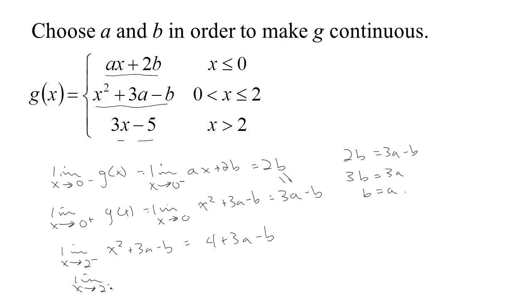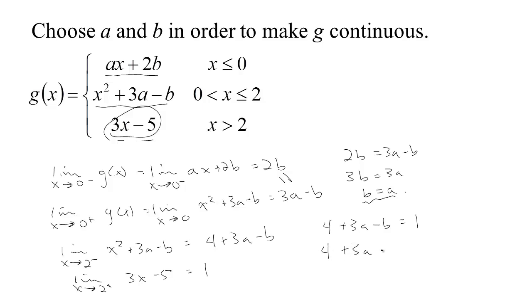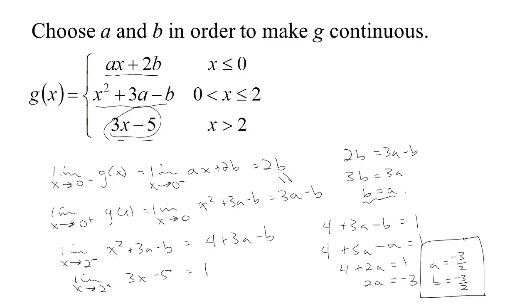Taking the limit from above at x equals 2, we use 3x minus 5, which gives 3 times 2 minus 5 equals 1. So for continuity at 2, we need 4 plus 3a minus b equals 1. Since b equals a, this becomes 4 plus 3a minus a equals 1, so 4 plus 2a equals 1, meaning 2a equals negative 3, so a equals negative 3 halves. Since b equals a, b is also negative 3 halves.